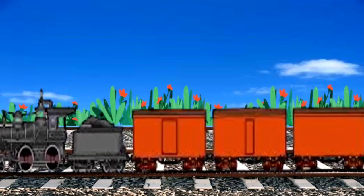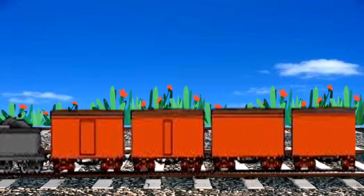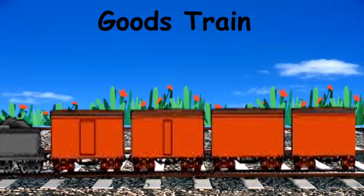Look at this train. Doesn't it look different? There's no door, no window. How will people go inside? You are right — this is not a passenger train like the one you saw earlier. This is a goods train, which carries things from one place to another. It carries goods, and people don't travel in this.